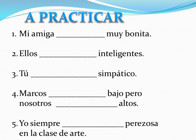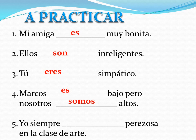Welcome back. Now we're going to go over the answers. Mi amiga — and even though we didn't talk about this earlier, anytime you're talking about one person like he or she, it's conjugated the same as ella or él. So mi amiga es muy bonita — my friend is very pretty. Ellos son inteligentes — with ellos you use son. Tú eres muy simpático — you are nice. Marcos es bajo, pero nosotros somos altos — Marcos is short, but we are tall. And the last one: yo siempre soy perezosa — I am very lazy in art class. Even though we had the word siempre in between yo and soy, it still has to be in the yo form. That's okay in art, but let's not see it happen in Spanish.